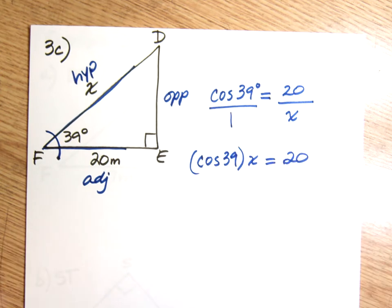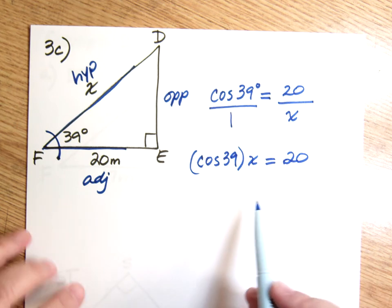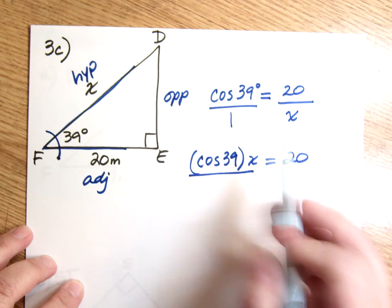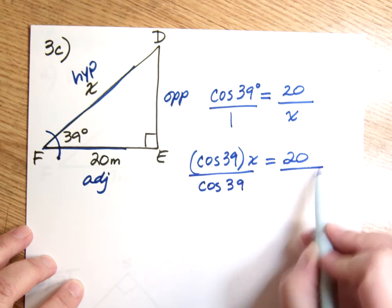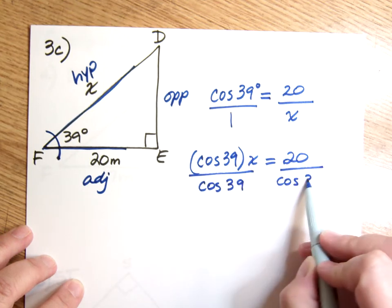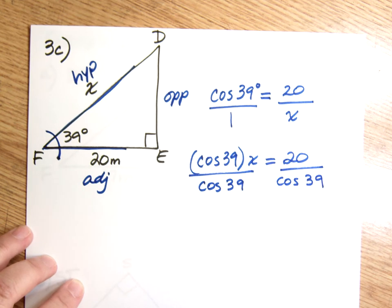When I cross multiply this one, I get cosine 39 times X equals 20 times 1. Ask myself, is X alone? And the answer here is no. X is not alone. So I'm not going to stop here. I'm going to go ahead and keep working until X is alone.